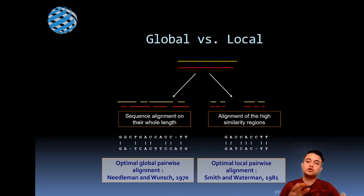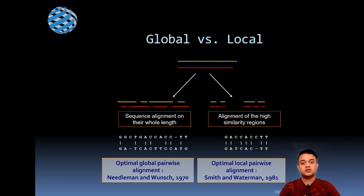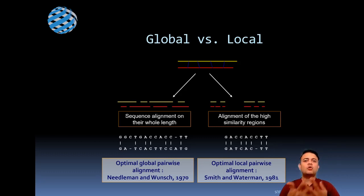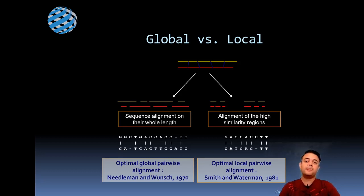Two classical algorithms are used for these alignments. From 1970, the Needleman-Wunsch algorithm is used for optimal global pairwise alignment and is still in use today. For local alignment, the commonly used algorithm is Smith-Waterman, from 1981. Both are quite intuitive — if you are interested, search them out. I'm not going into the technicalities, but these algorithms are the standard tools for global and local alignment.